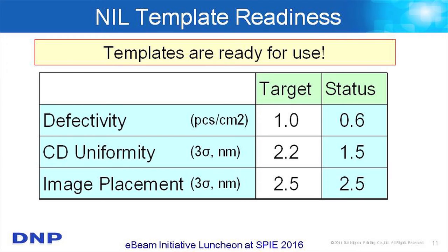Summarizing the half-pitch 3x level targets: our first defectivity target was one defect per square centimeter, and as champion data we achieved 0.6 two years ago. CD uniformity is less than 2 nanometers. Image placement is within the target of 2.5 nanometers. We believe that template quality is very suitable for that node.